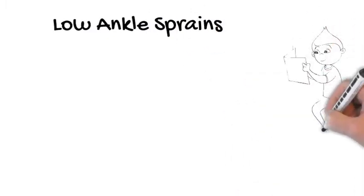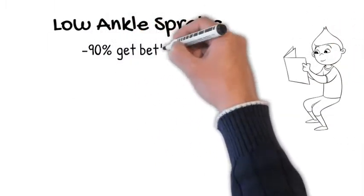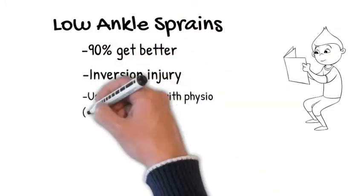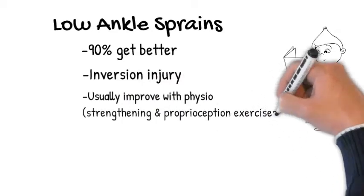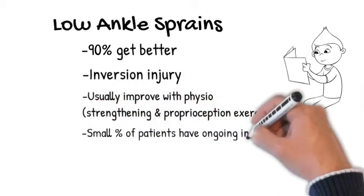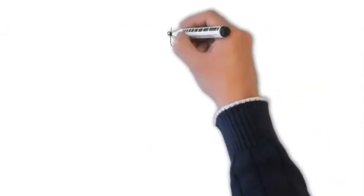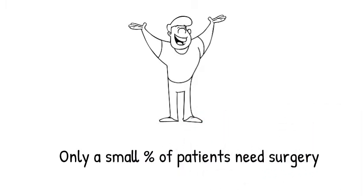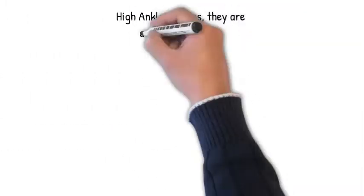Low ankle sprains are generally the less severe injury to happen, so 90% of them will get better. They usually occur with an inversion injury, so you roll your foot in, usually improve with physio, and only a small number of patients have ongoing instability which they might need to treat. What that means is you generally have a happier or better outcome with a low ankle sprain than with a high ankle sprain, and only a small number of those patients will need surgery.